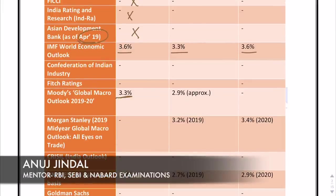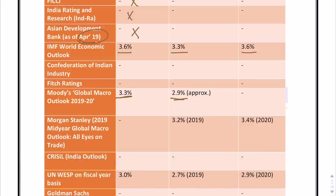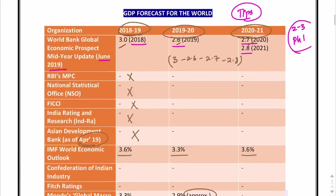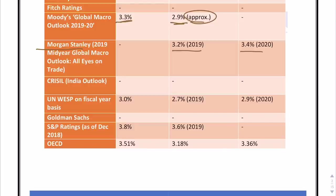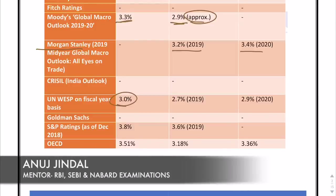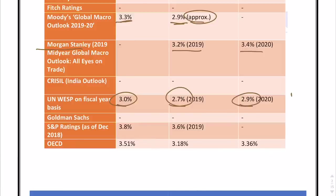Similarly, Moody's says 3.3% for 2018-19 and approximately 2.96% for 2019-20. Morgan Stanley says 3.2% for 2019-20 and 3.4% for 2020-2021. UNWESP — World Economic Situation and Prospects — says 3% for 2018-19, 2.7%, and 2.9%. You have to mug them up; there is no other way.